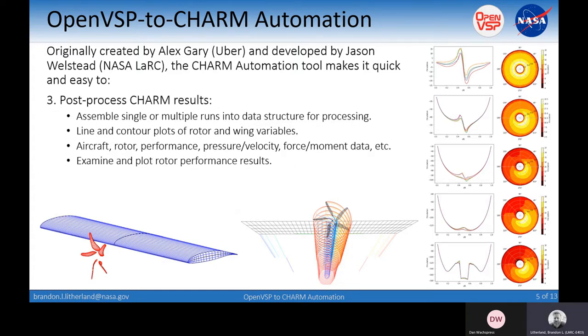The other benefit is that you can post-process CHARM results, and you do not need a CHARM license to accomplish this. You just need the files that are written. You can take single or multiple runs and build them into a data structure for processing. The line and contour plot options are built in. You have access to things like your aircraft performance, rotor performance, pressure and velocity information, force and moment data.